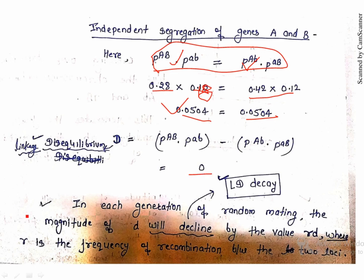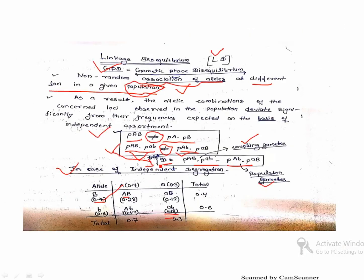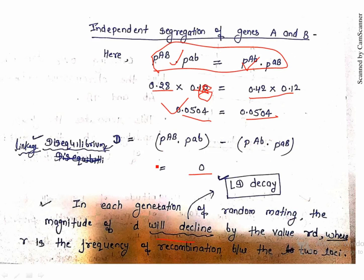In each generation of random mating, the magnitude of LD will decline. LD is disturbed by recombination because recombination works against independent segregation. So if recombination occurs in a random mating population, D will decline. In each generation, the magnitude of D declines by the value of r×D, where r is the frequency of recombination between the two loci.